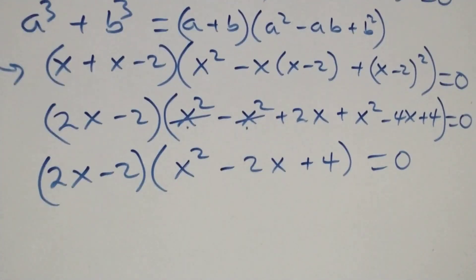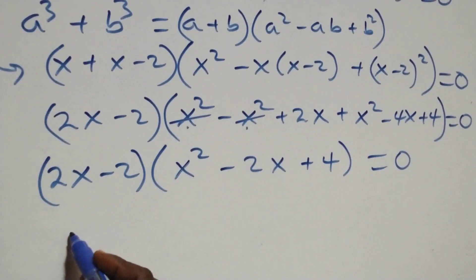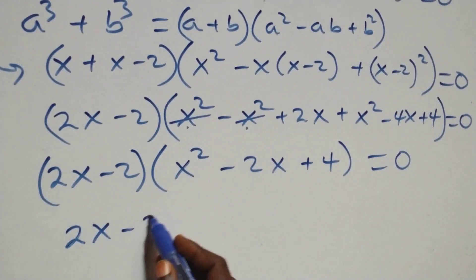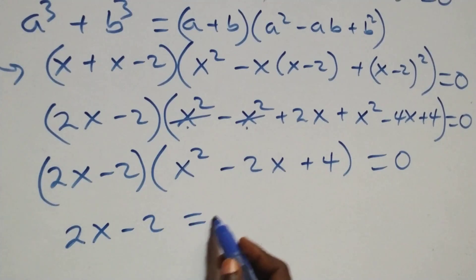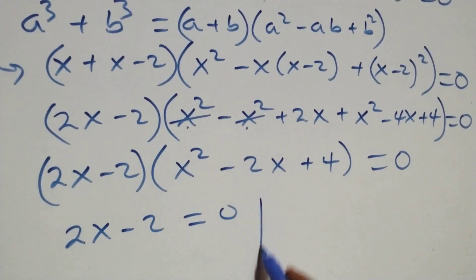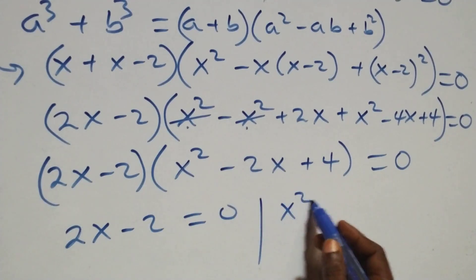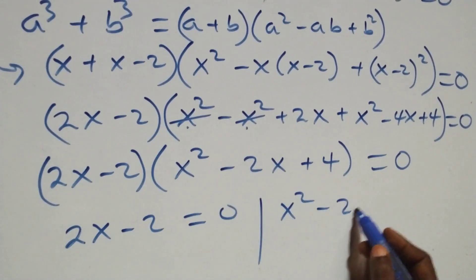This gives two possible sub-cases: 2x minus 2 equals 0, giving x equals 1; or x squared minus 2x plus 4 equals 0.